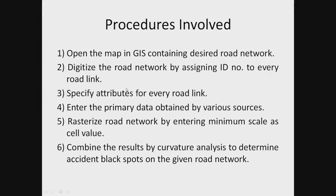The procedures involved in conducting accident analysis are: first, open the map in GIS containing the desired road network. Then digitize every node of the road by assigning an ID number to every road link. Specify attributes for every road link such as rack radius, then enter primary data obtained from various sources. Rasterize the road network by entering minimum scale as cell value, and finally combine the result by curvature analysis to determine accident black spots on the given road network.